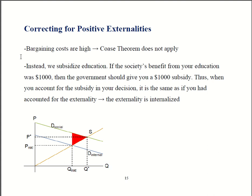So what can we do instead? We can subsidize education. Let's say that society benefits by $1,000 from your education. What the government could then do is give you a $1,000 subsidy. That would shift your demand curve — your D internal — up by $1,000, causing it to line up with society's demand. That would make you internalize the externality. When you're thinking about that $1,000 subsidy, it's going to be the same as if you had thought about society's $1,000 benefit. So accounting for the subsidy is like accounting for society's benefits. Now your decision-making is going to be efficient, and that will cause us to get to the efficient outcome and fix the problem in the market.